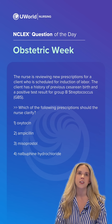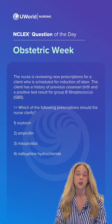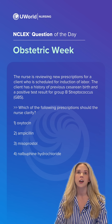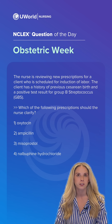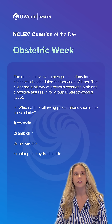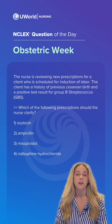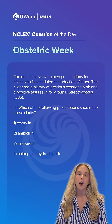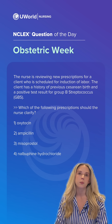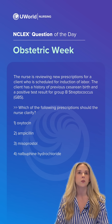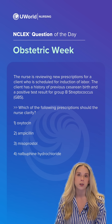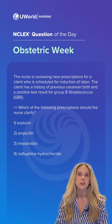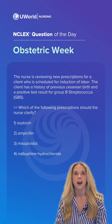Today's question is that the nurse is reviewing new prescriptions for a client who is scheduled for induction of labor. The client has a history of previous cesarean birth and a positive test result for group B streptococcus, or GBS. Which of the following prescriptions should the nurse clarify?